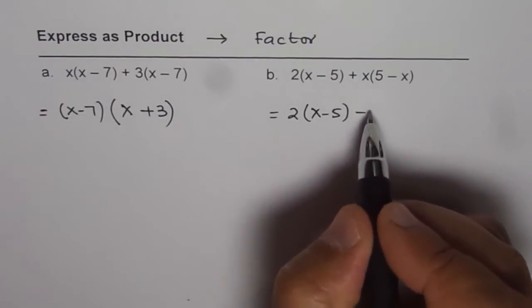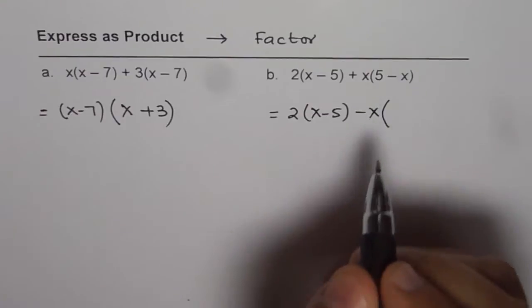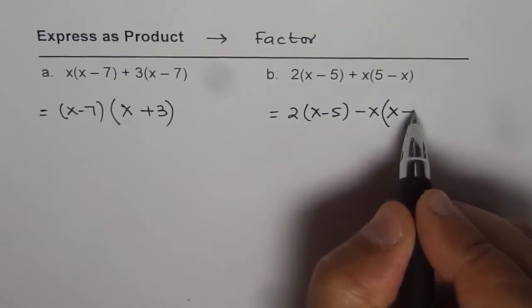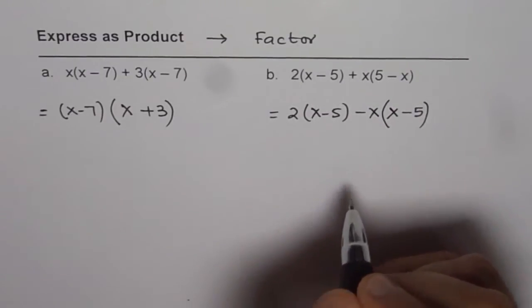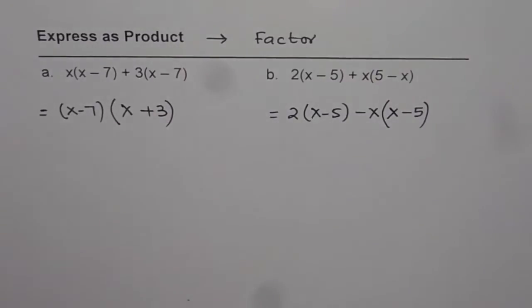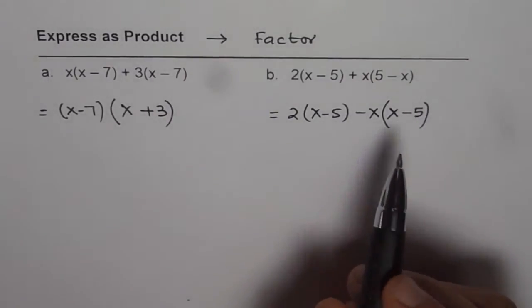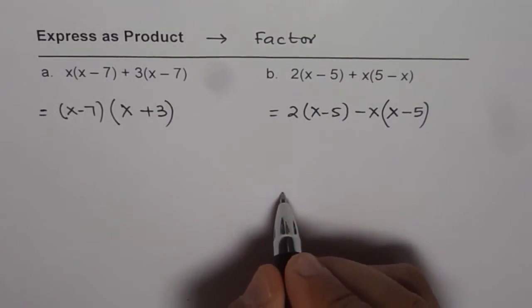In that case, I can write this second term as x minus 5. This is kind of tricky. You will notice that, let me show it here. x times 5 minus x is equal to what?